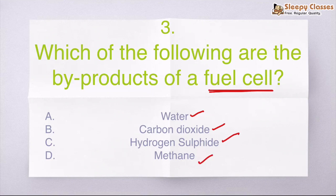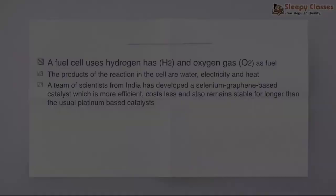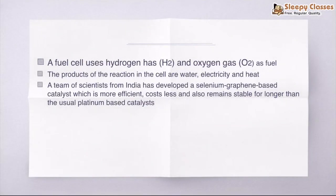The correct answer is A. So fuel cell basically uses hydrogen gas H2 and oxygen gas O2 as fuel. And when you combine it, the products are water, electricity and heat. So byproducts are three.